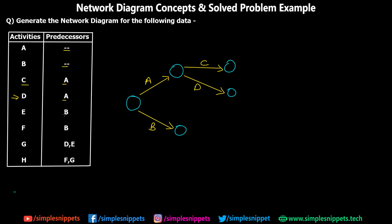For activity E, B must already have happened. Since B leads to its end node, E starts from there. Similarly, F also has B as its predecessor, so F starts from the same node as E. I'll draw both E and F starting from the node reached after B. By the way, I recommend drawing this network diagram with a pencil the first time, since you'll likely make mistakes.